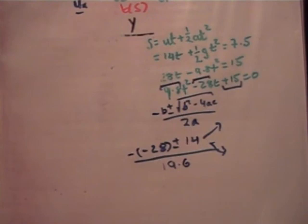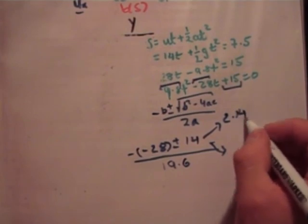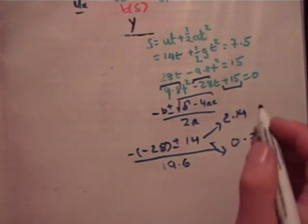So it's 28 plus 14 divided by 19.6, giving an answer of 2.14. And it's 28 minus 14 divided by 19.6, giving an answer of 0.71. So both those times are correct. Clearly the time, the smaller time at 0.71 is the time at which it is at the lower side of the motion, and the time 2.14 is the later time.